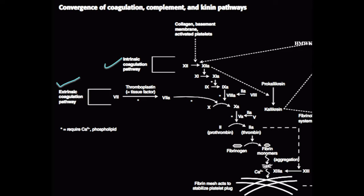Factor 10 begins the common pathway. Activated 10a uses factor 5a as a cofactor to convert factor 2, or prothrombin, into factor 2a, or thrombin. Once thrombin is activated, it begins to break down fibrinogen into fibrin monomers, which will aggregate in the presence of calcium into clots.